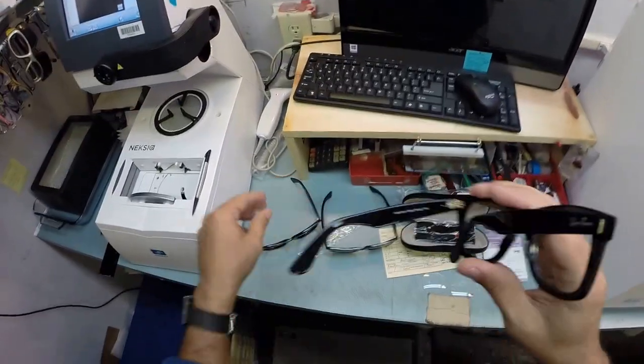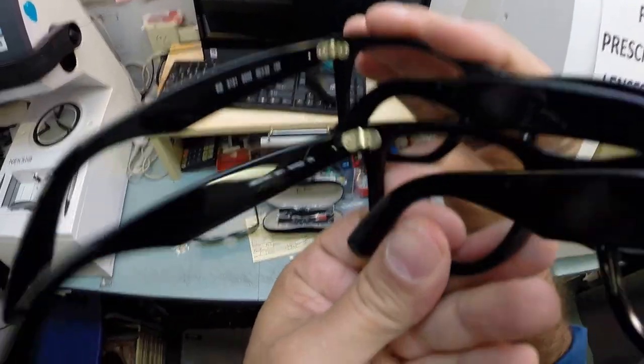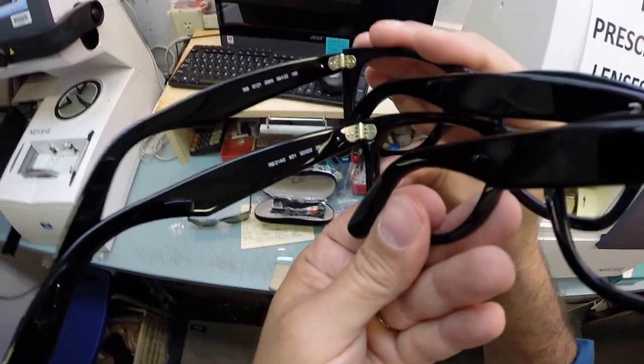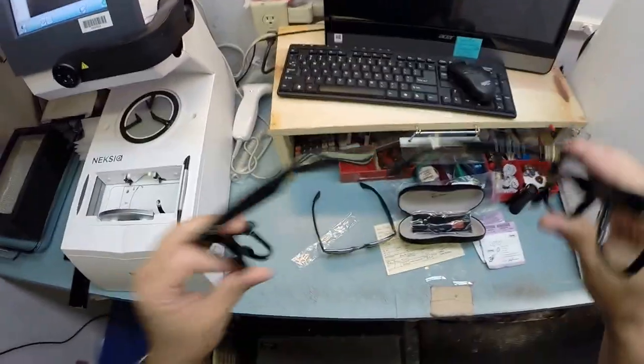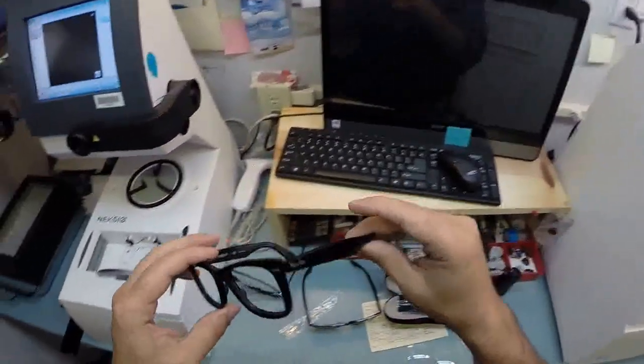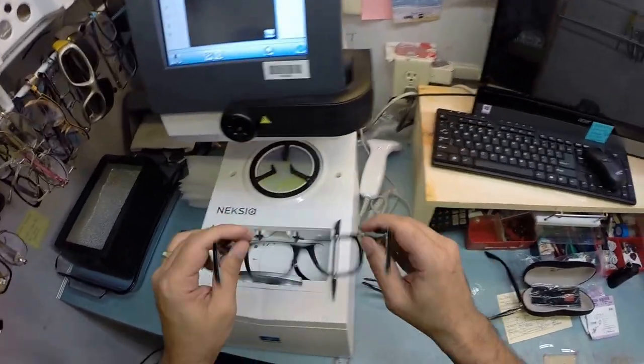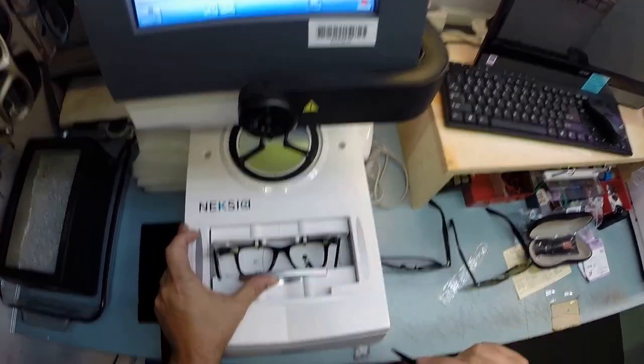They both still have the triple barrel hinge. None of that has changed. Still made incredibly strong. You can run over these with a car. Although, I don't recommend you doing it. And, let me make sure I got the right one. Yep, 5121. Other than that, they are identical. In fact, I bet the lenses will even pop into these. But, I'm going to take your frame, put it into the tracing element of my edger, and hit start.